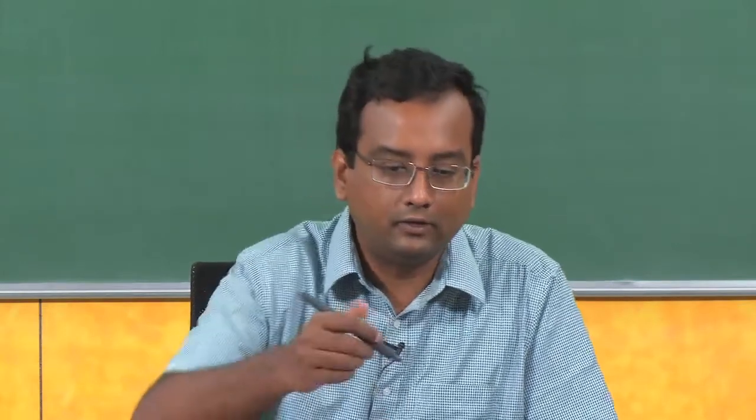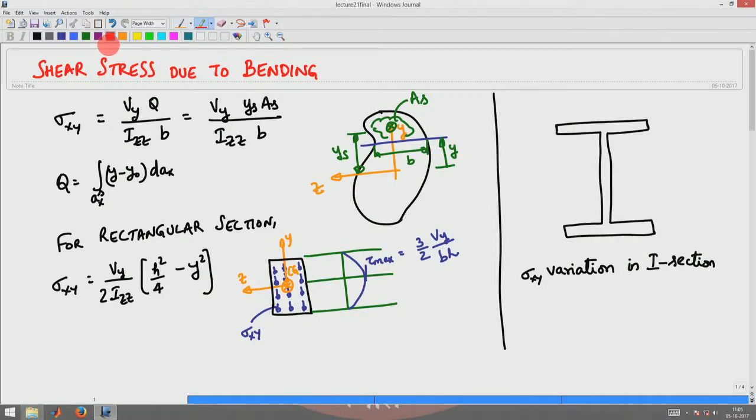Welcome to the 21st lecture in Mechanics of Materials. In the last lecture we saw how to compute the shear stresses due to bending. In particular, we saw that the sigma xy shear stress could be computed from the expression: sigma xy equals Vy times Q divided by Izz times B.